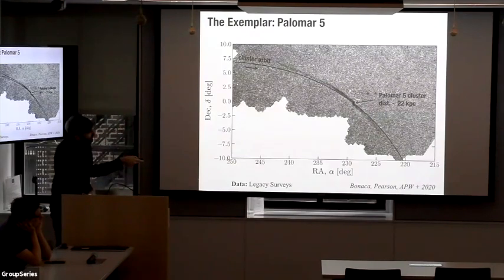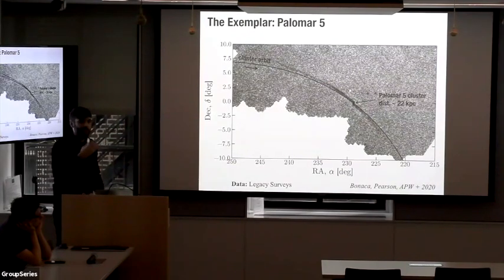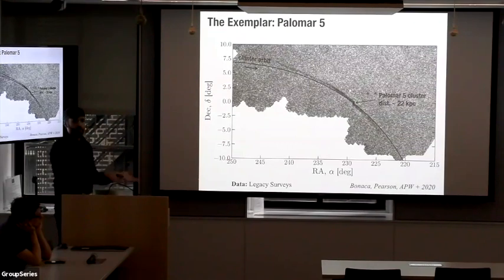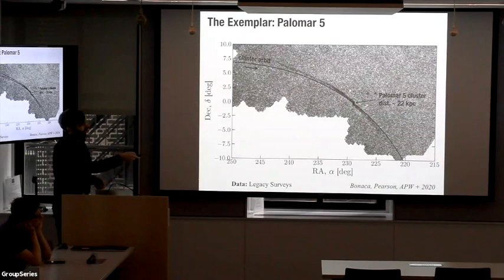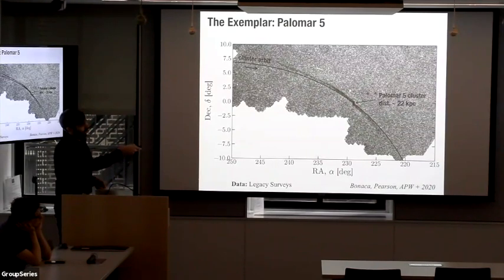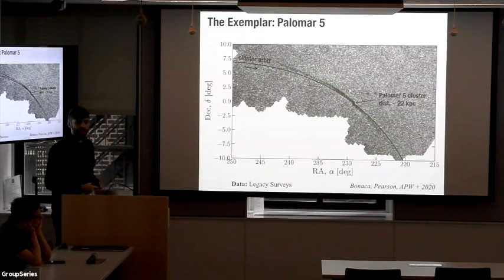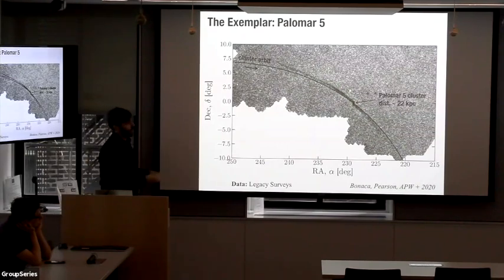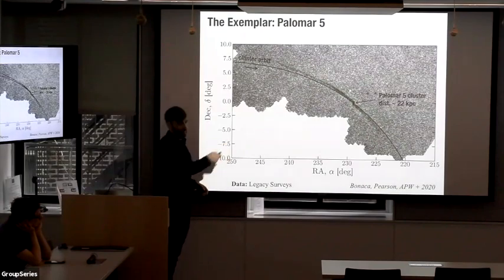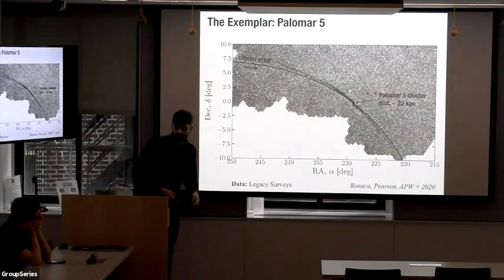Interestingly, if you just take the proper motion of the cluster and the distance and other kinematic properties, and numerically integrate an orbit in a toy model of the Milky Way and plot that on the sky, the trailing tail and the leading tail neatly almost delineate what that orbit of the cluster is — without ever having to know anything about the cluster or the tails.